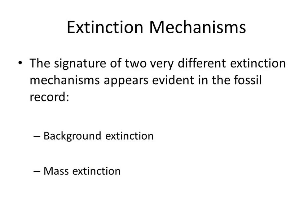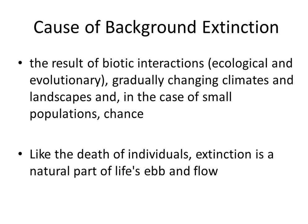The signature of two very different extinction mechanisms appears evident in the fossil record. First is background extinction, the second is mass extinction. Background extinction is the result of biotic interactions, both ecological and evolutionary, gradually changing climates and landscapes, and in the case of small populations, chance. Like the death of individuals, extinction is a natural part of life's ebb and flow.